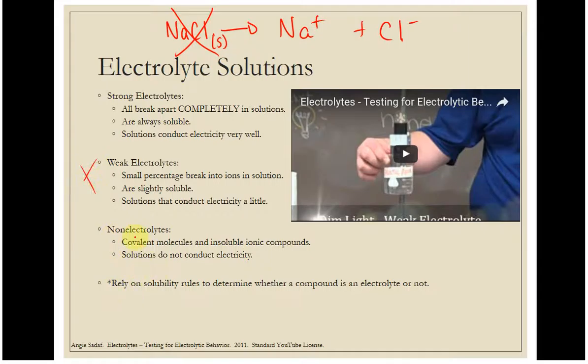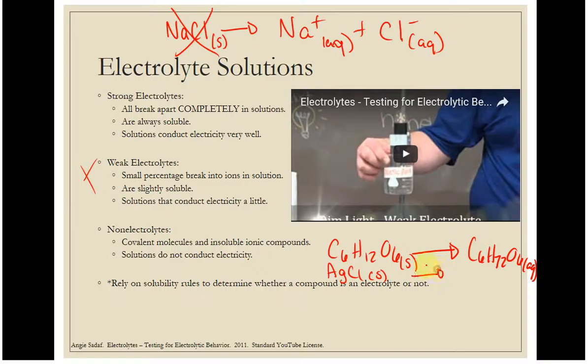Non-electrolytes tend to be covalent molecules like sugar or alcohols. C6H12O6 doesn't break apart - it could go from solid to aqueous, but it is not going to be ionic. Solid to aqueous but no charges. The other thing that could happen is you could have something like an insoluble ionic compound like silver chloride that is not soluble in water, so it just stays solid at the bottom of the beaker. These two are either covalent molecules that don't break apart or insoluble ionic compounds that do not contribute ions to solution. Without ions, you can't conduct electricity.